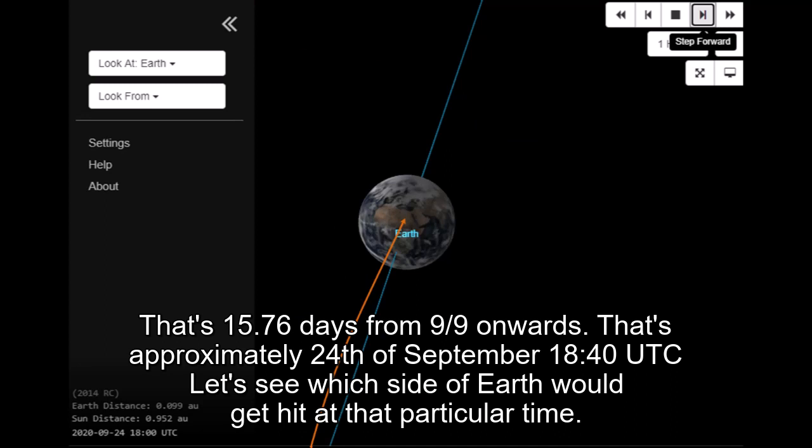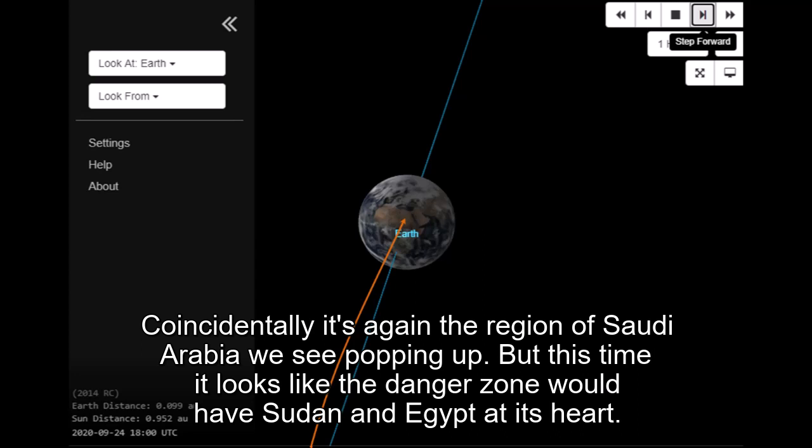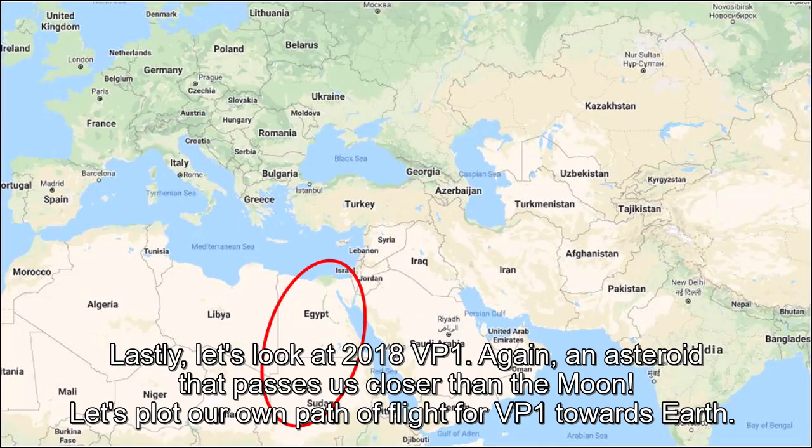Let's see which side of Earth would get hit at that particular time. Coincidentally it's again the region of Saudi Arabia we see popping up. But this time, it looks like the danger zone would have Sudan and Egypt at its heart.